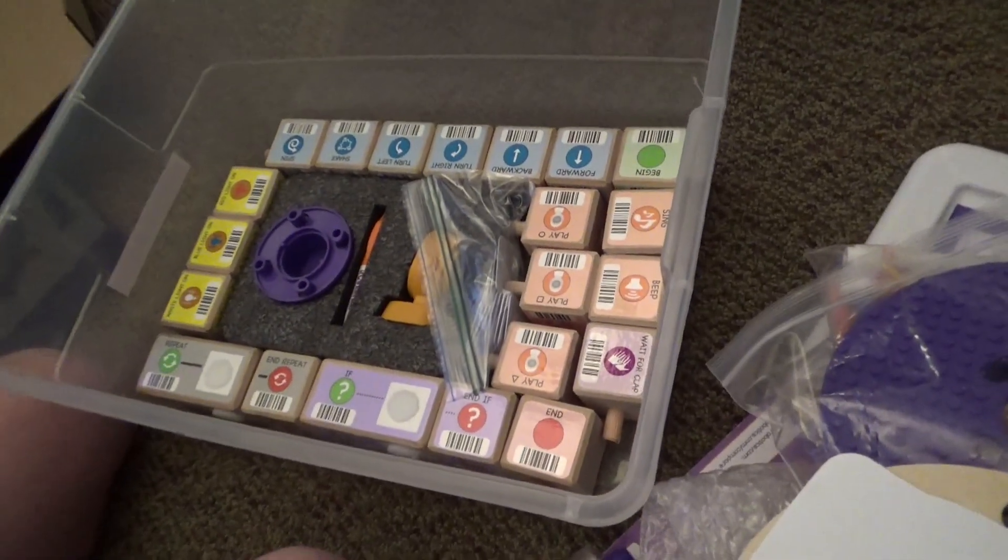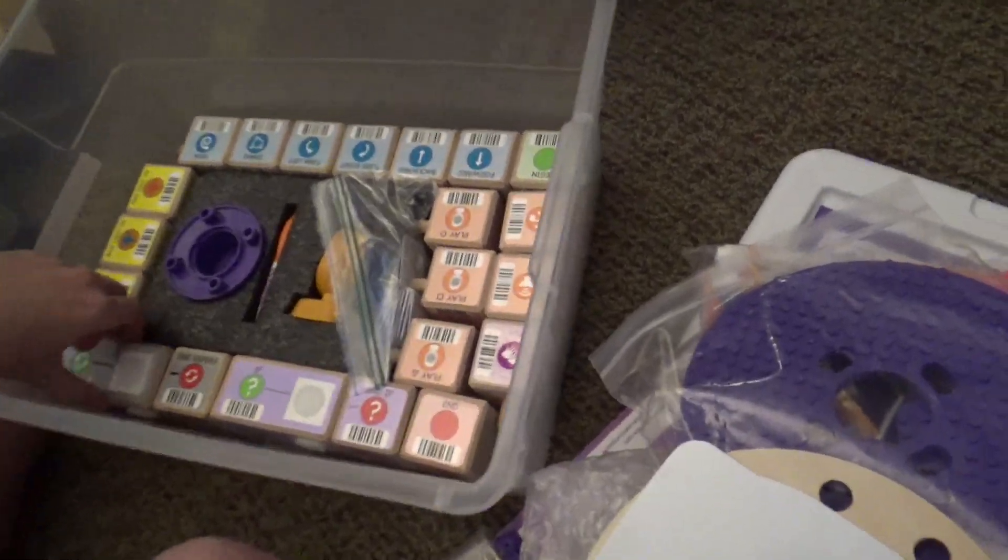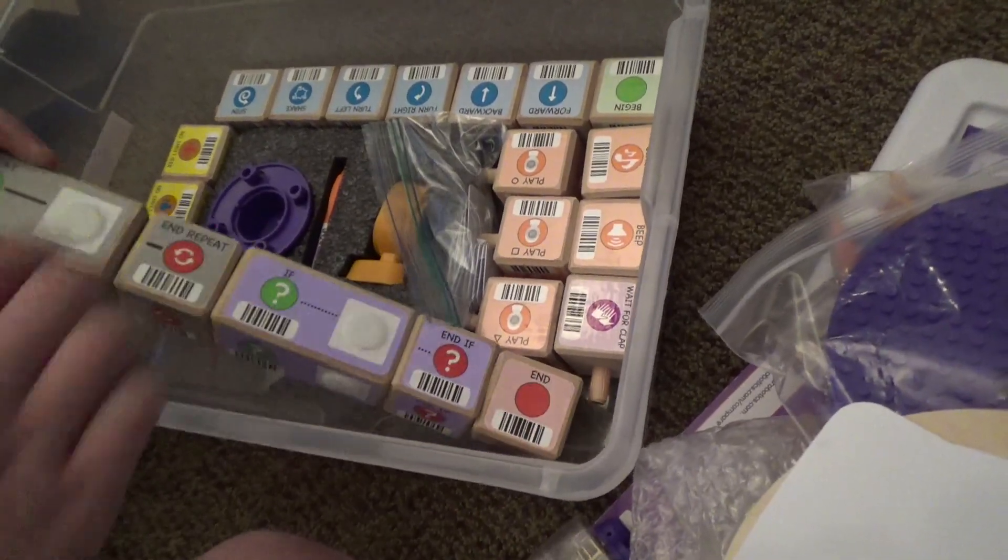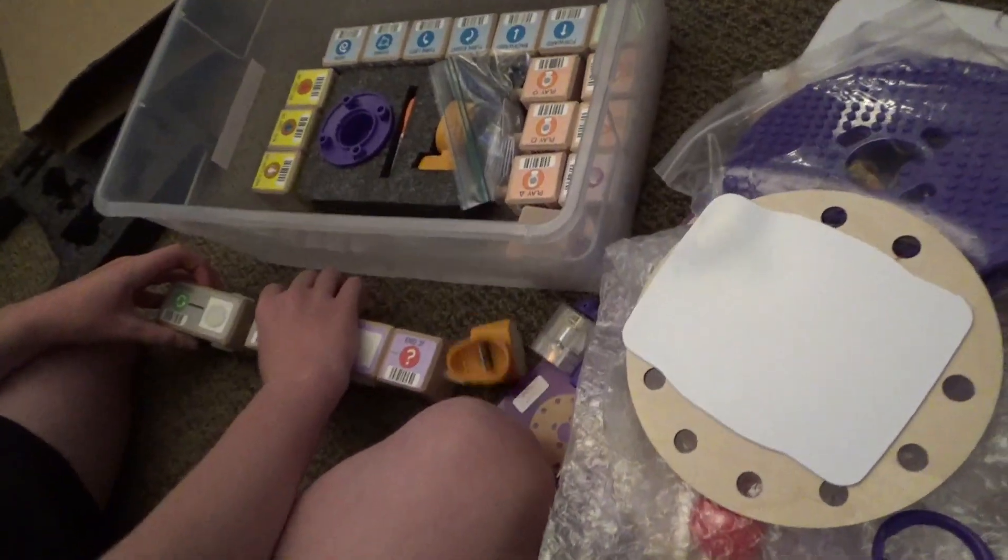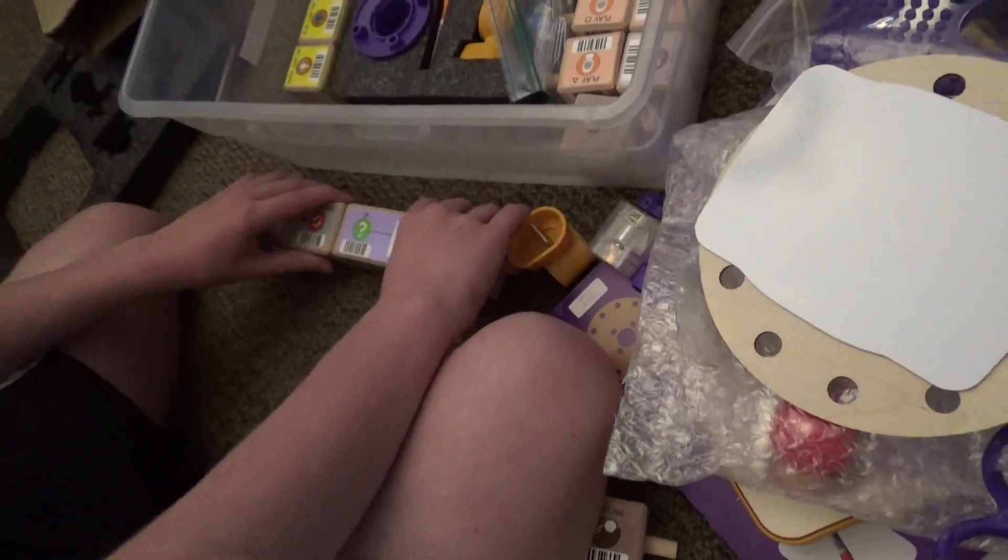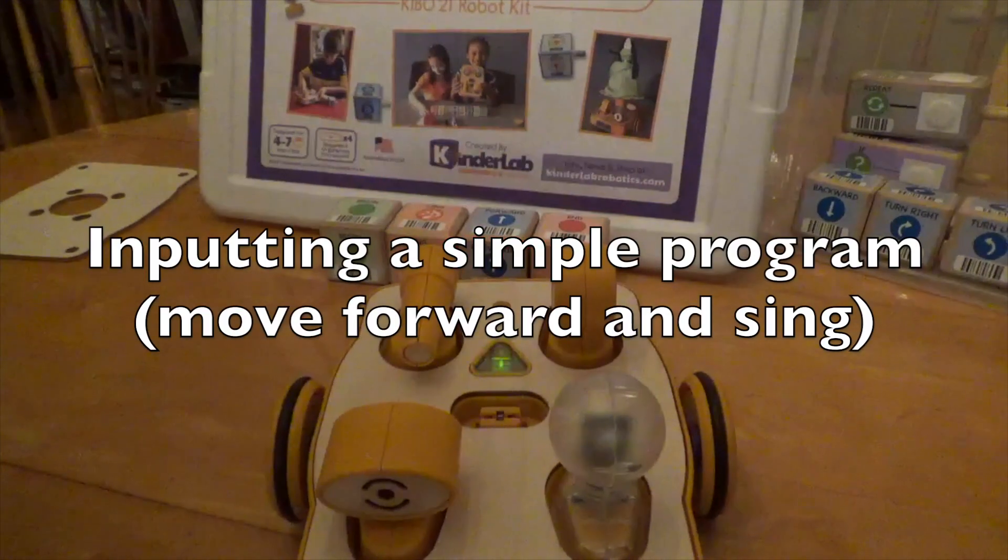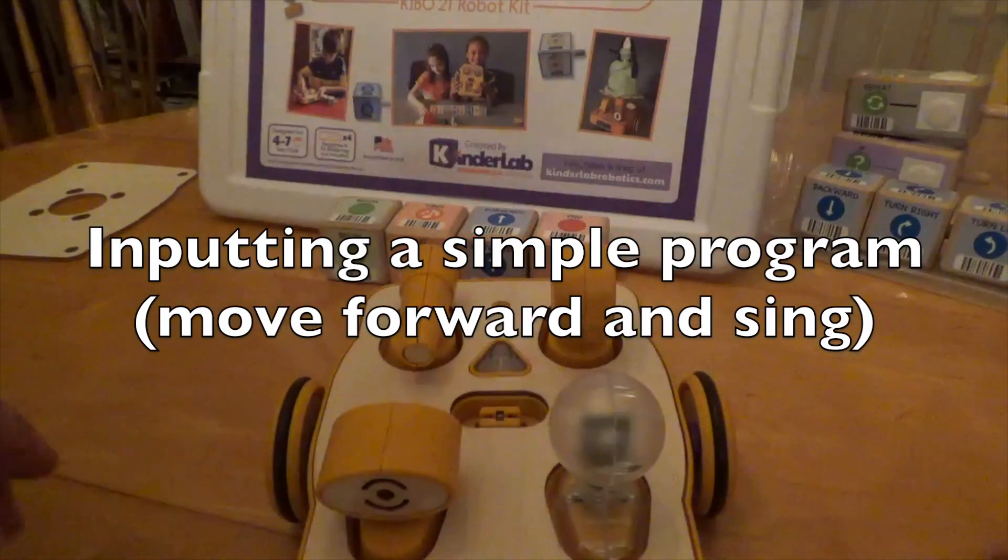Now the kit you're looking at here is called the Kibo 21 Robot Kit. It costs $500 and comes in this plastic tub. The cool thing about Kibo is that it uses a red light scanner that reads barcodes off of wooden blocks.